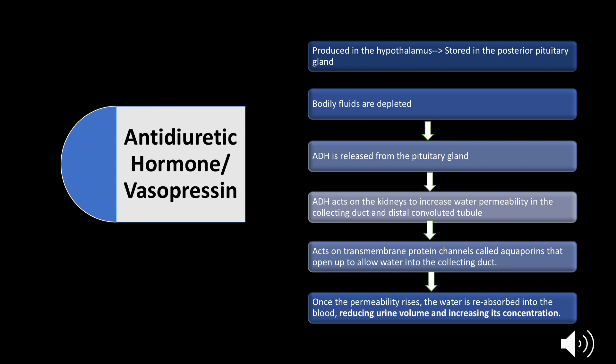ADH is produced in the hypothalamus and stored in the posterior pituitary gland. In a normal healthy person, when bodily fluids are depleted or you're dehydrated, ADH is released from the pituitary gland. It acts on the kidneys to increase water permeability in the collecting duct and the distal convoluted tubule, so that it reabsorbs more water, reduces urine volume, and increases its concentration.